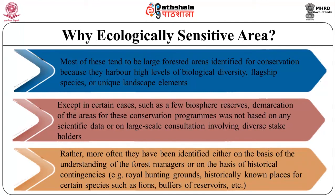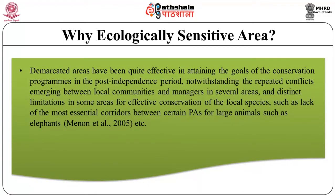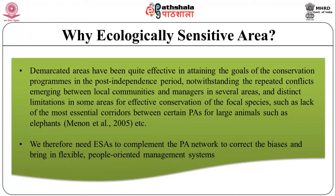More often than not, protected areas have been identified either on the basis of the understanding of forest managers or on the basis of historical contingencies — for example, royal hunting grounds, historically known places for certain species, or buffers of reservoirs. Nevertheless, the demarcated areas have been quite effective in attaining conservation goals in the post-independence period, notwithstanding repeated conflicts between local communities and managers and limitations such as lack of essential corridors for large animals like elephants. We therefore need ECAs to complement the protected area network, to correct the bias and bring in flexible, people-oriented management systems.